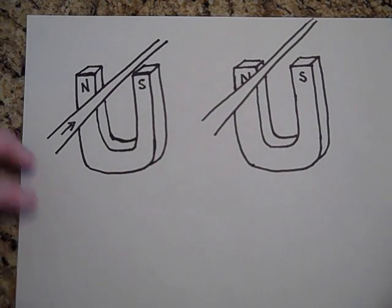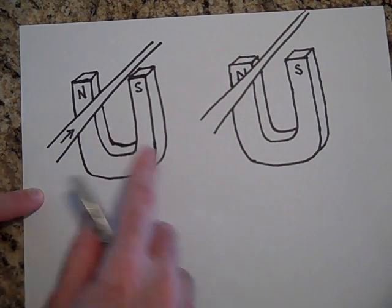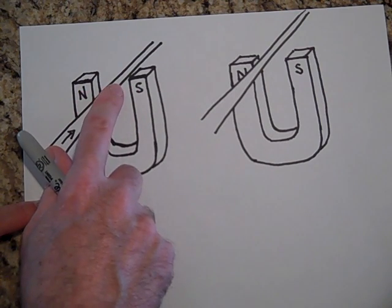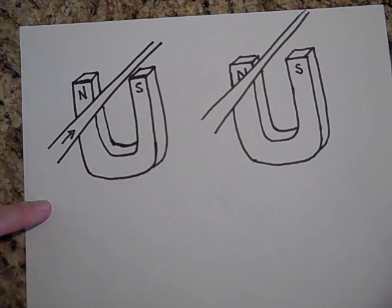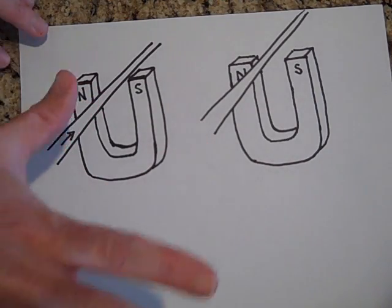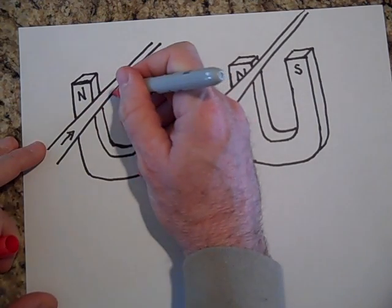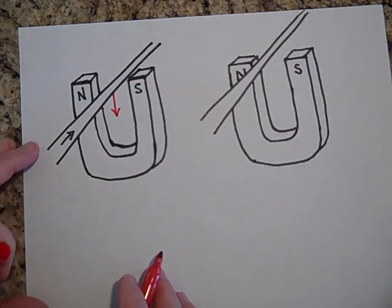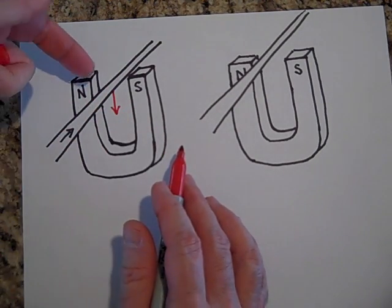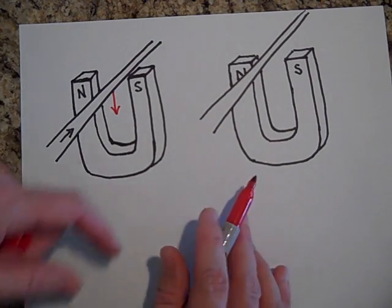If current is going down the wire in this magnetic field — remember the magnetic field goes from north to south — I take my right hand and put my thumb in the direction of the current. This wire will be pushed down. That's the motor effect: we're taking electricity and making mechanical, kinetic energy.